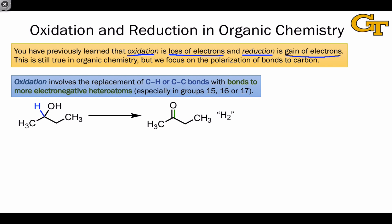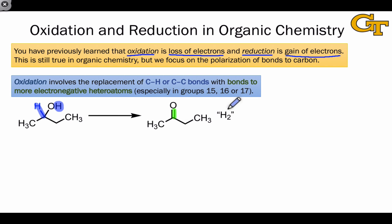Oxidation at carbon involves the replacement of a carbon-hydrogen or carbon-carbon bond with a bond to a more electronegative heteroatom, and the new bond may be a single, double, or even triple bond. One thing to notice here is that H2 has effectively been eliminated from the substrate — though H2 isn't a direct byproduct in most cases, but is incorporated into whatever oxidizing agent is used to accomplish this transformation.